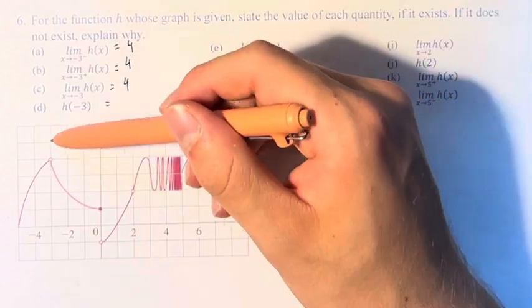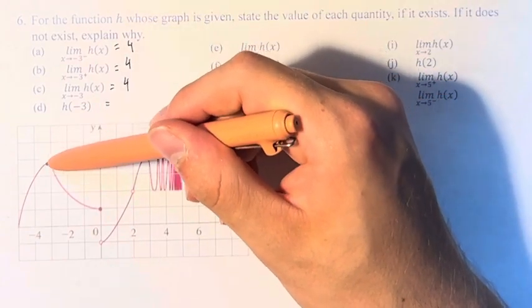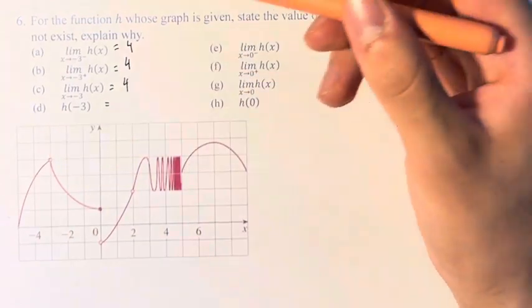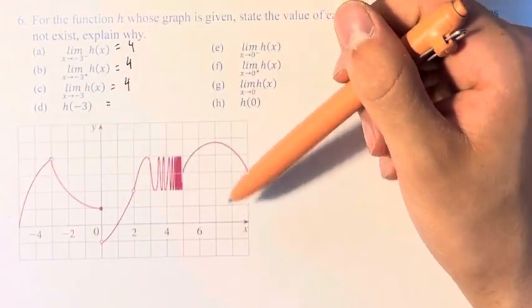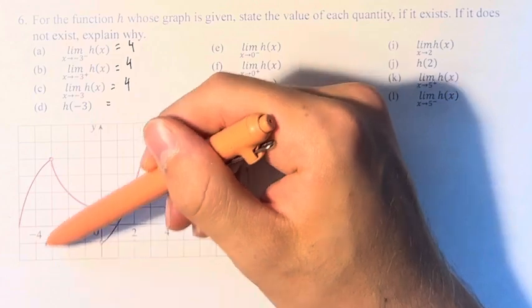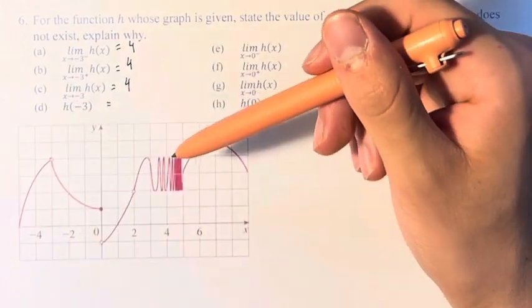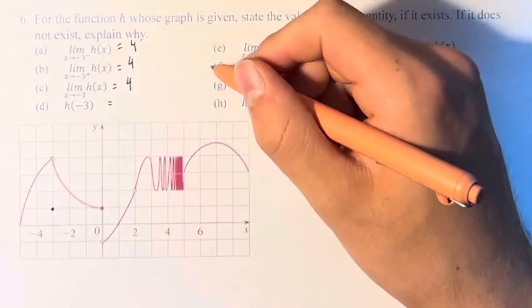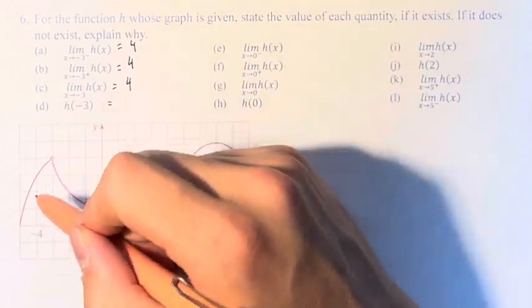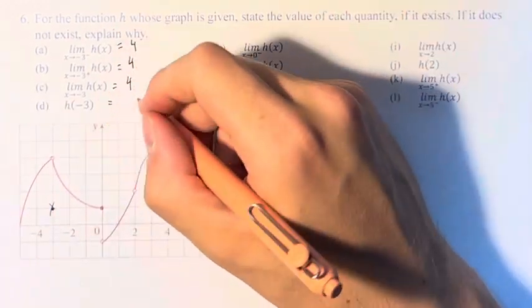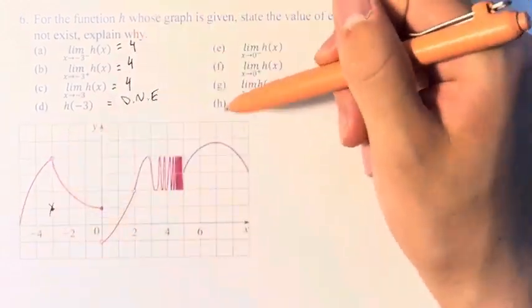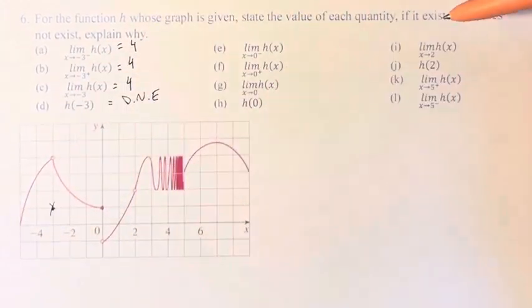However, notice that at negative 3 itself, the point that they're all approaching, we have an open circle. This means the function does not exist at x is equal to negative 3. For that to be true, there would need to be another point down here that's closed in, but there's not. So h of negative 3 does not exist. The function approaches 4 when you get towards that point, but at the point itself, it doesn't exist.